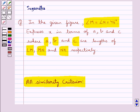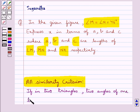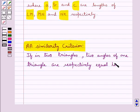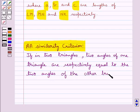According to this we have that if, in two triangles, two angles of one triangle are respectively equal to the two angles of the other triangle, then the two triangles are similar.